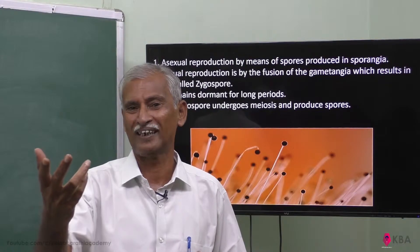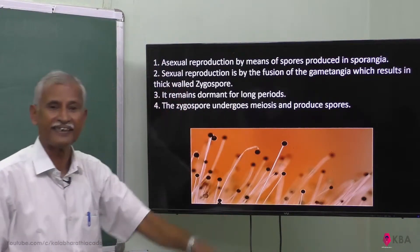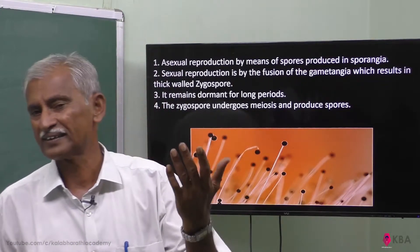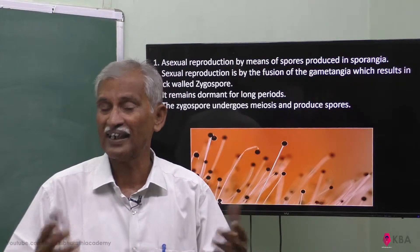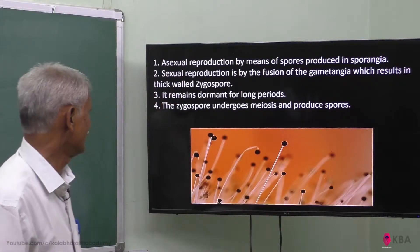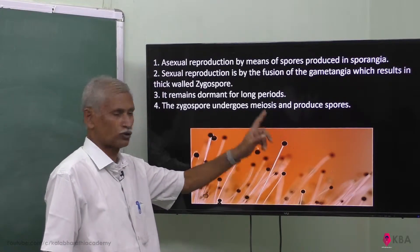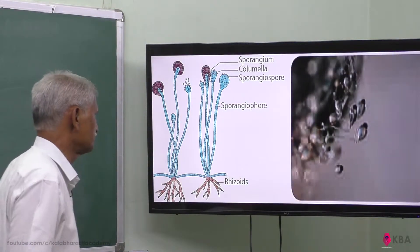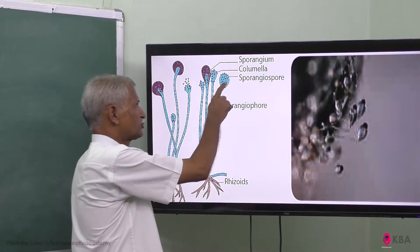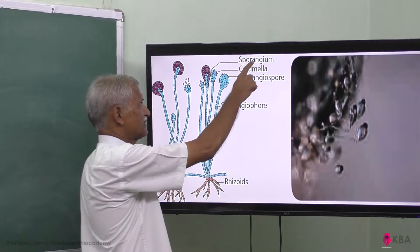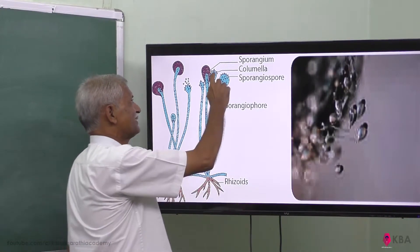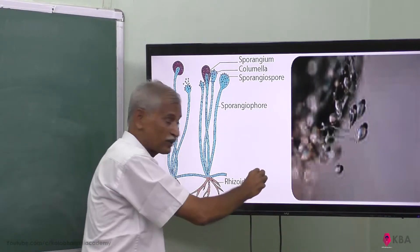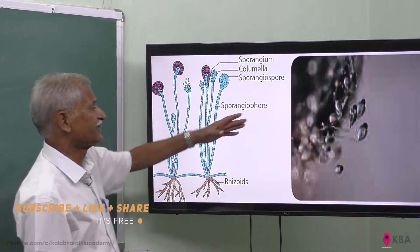Under favorable conditions it germinates. The zygospore undergoes meiosis, and through meiotic division, further spores are produced and dispersed. This diploid cell becomes haploid. These spores are produced in the sporangia and dispersed, allowing them to spread to many places.